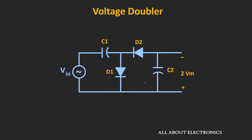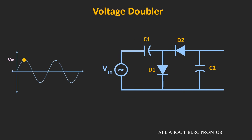This is the circuit of the voltage doubler. If we apply the AC input signal Vin with a peak amplitude of Vm to this circuit, then at the output we will get a DC voltage of 2Vm. Now let us understand the working of this circuit.